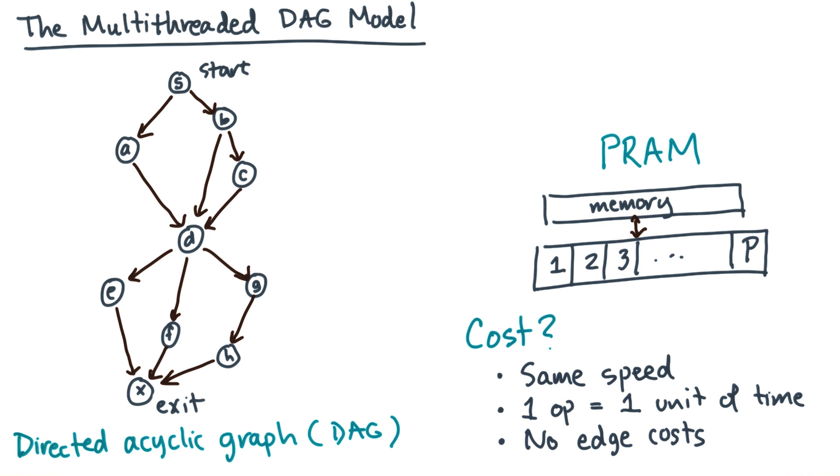The first assumption is that all processors run at the same speed. The second assumption is that each operation takes one unit of time. And the last assumption is that these edges don't have any costs associated with them. So let's start with these assumptions and let's apply them to some sample DAGs.